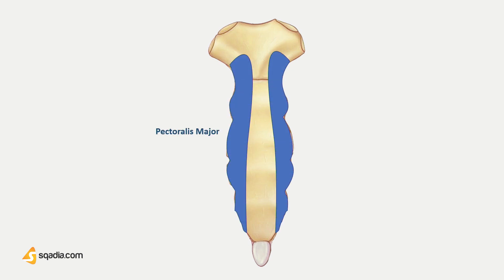starting from the manubrium running down towards the body bilaterally. The sternal head of sternocleidomastoid gets attached just superior to the pectoralis major on the anterior aspect of manubrium sternum.